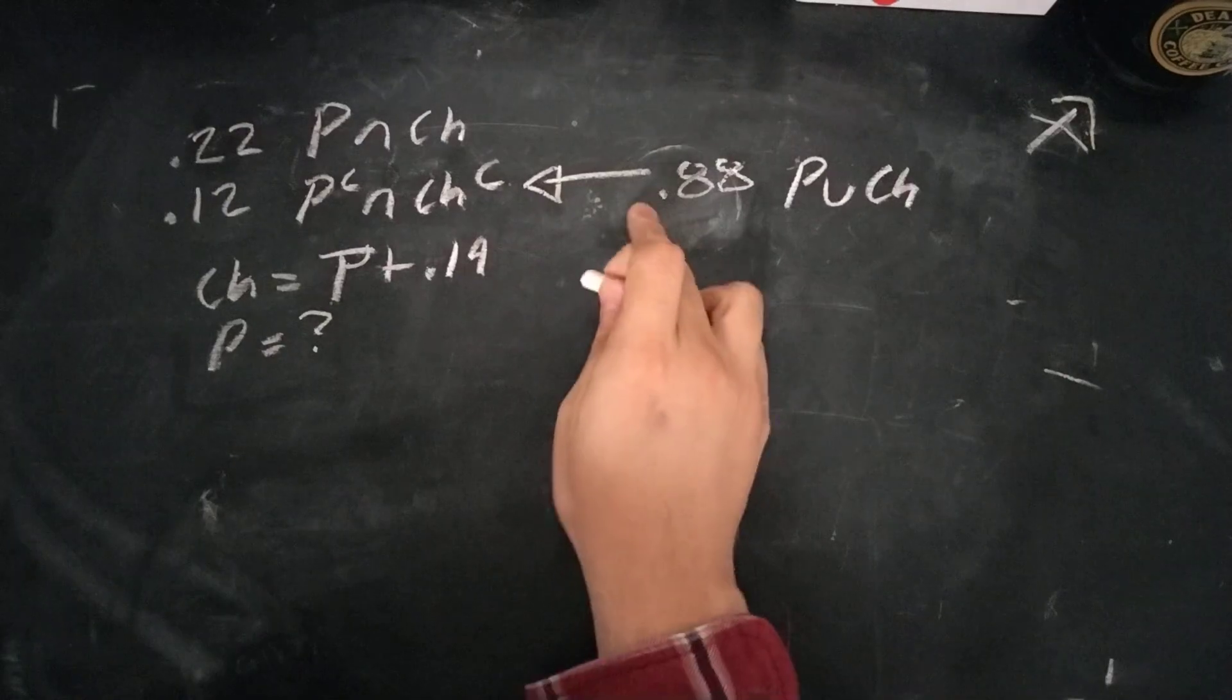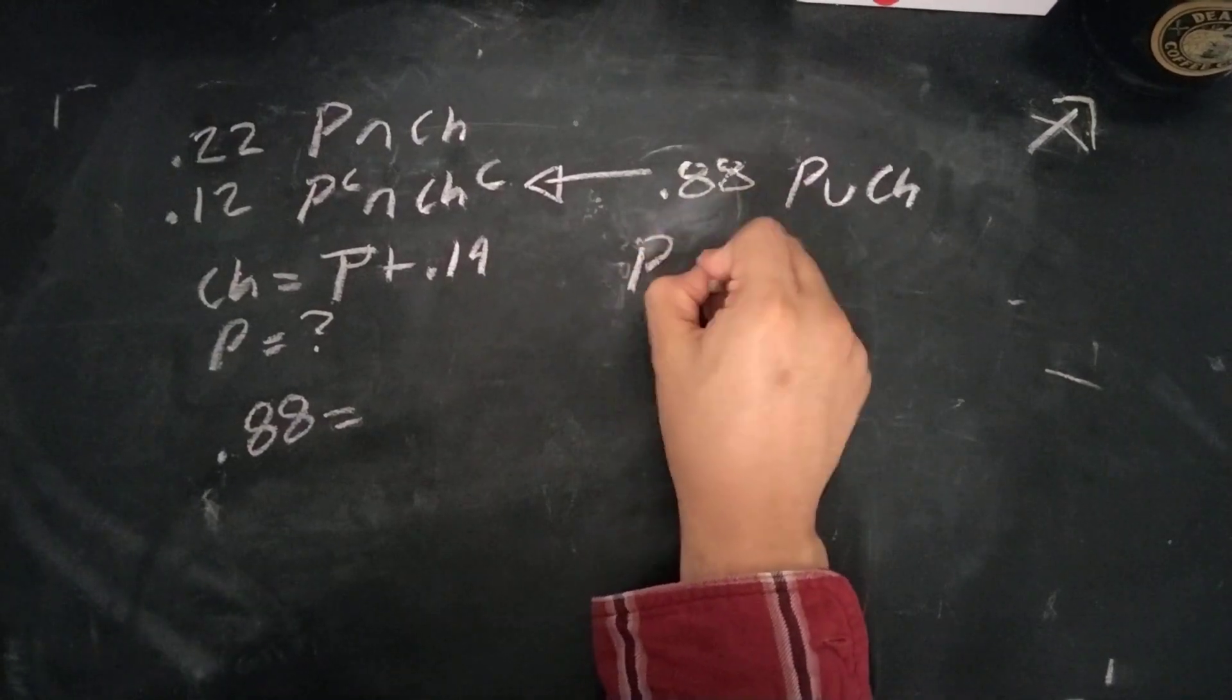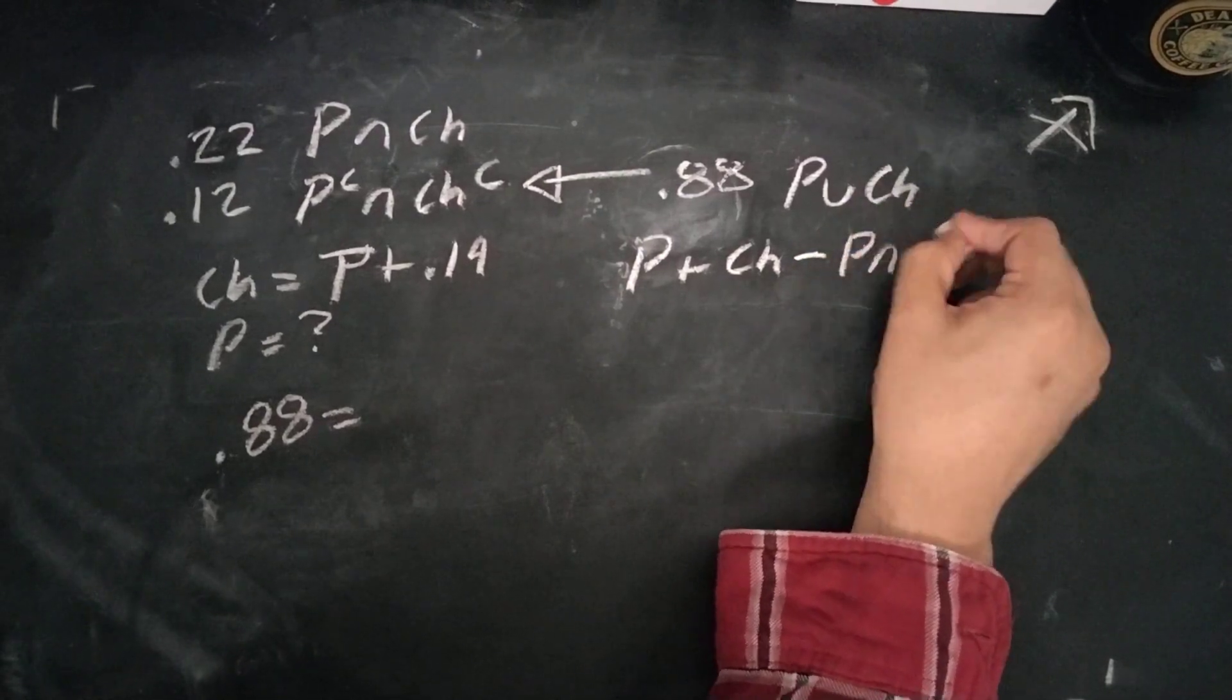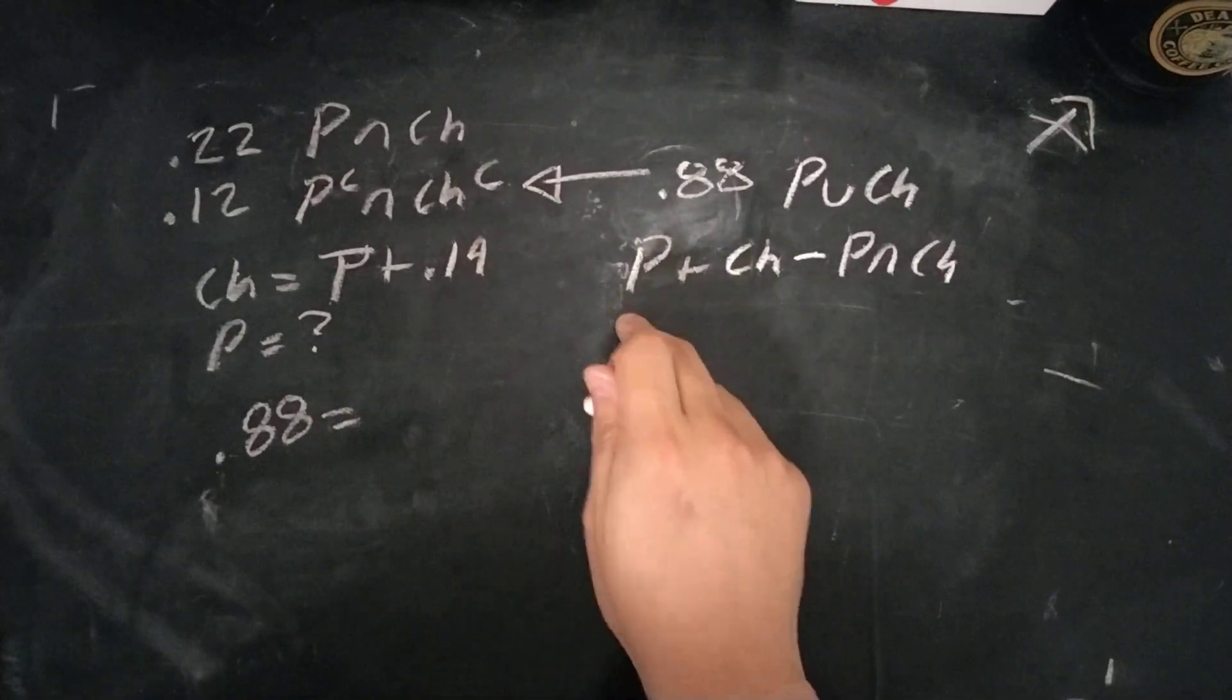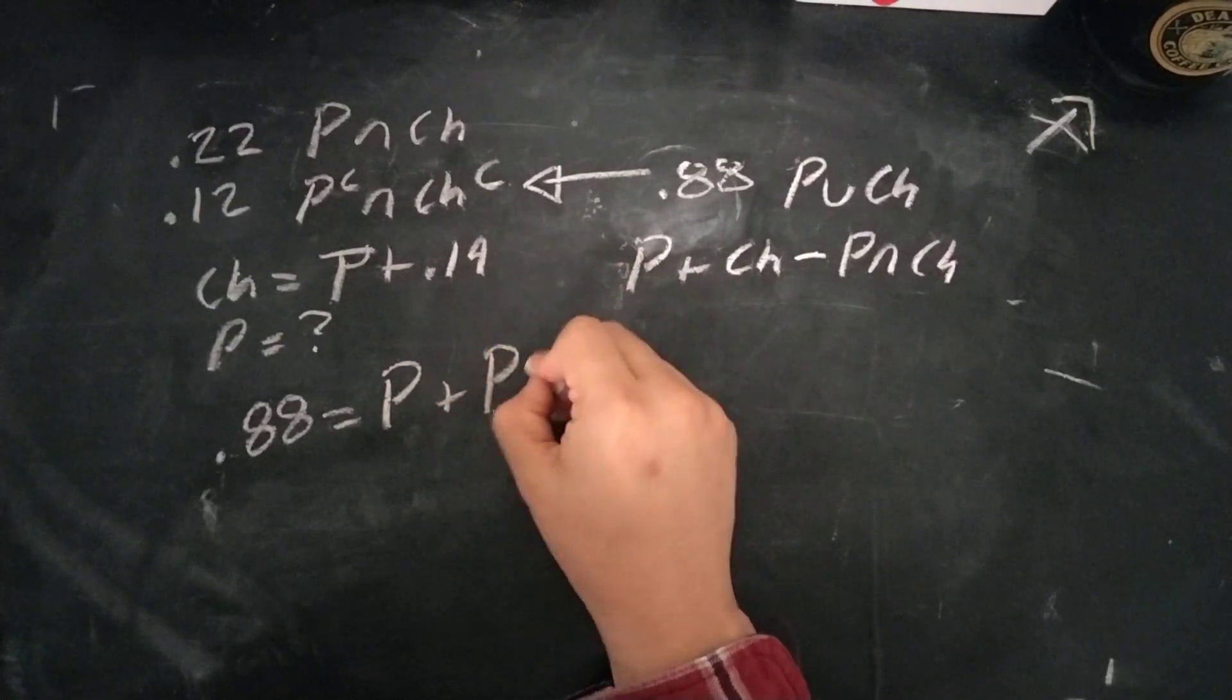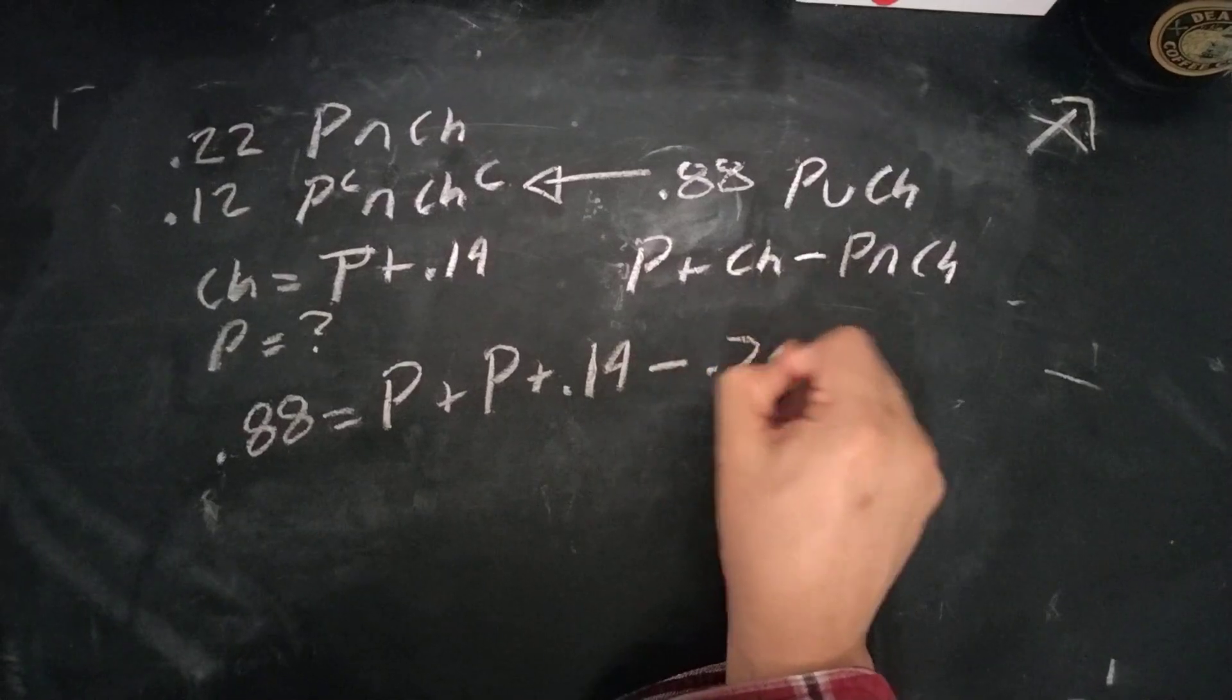And so, what we could do from here is, if we know that's 0.88, we can rewrite this as P plus CH minus the intersect of P and CH. So we substitute these values back here. So that's P, which is just some value P. CH is just P plus 0.14, and then this intersect is equal to 0.22.